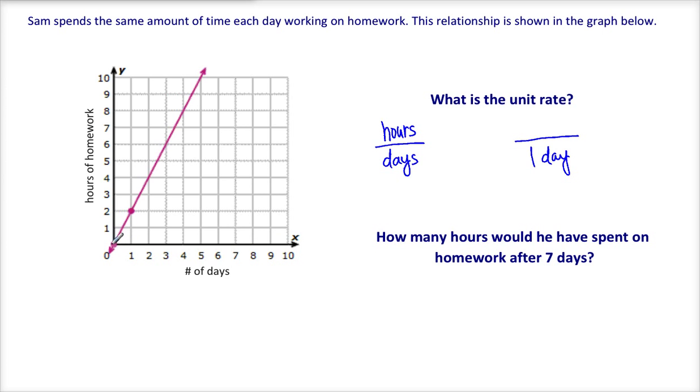And notice it starts at 0,0, so this is a proportional relationship. So let's go to after one day, follow it up to the line. Here's our point. How many hours has it been? Two hours. So it looks like he spends two hours per day working on homework. So that's our unit rate.